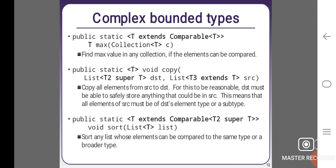Complex bounded types. public static <T extends Comparable<T>> T max(Collection<T> c) - find maximum value in any collection if the elements can be compared. public static <T> void copy(List<? super T> dst, List<? extends T> src) - copy all elements from src to dst. For this to be reasonable, dst must be able to safely store anything that could be in src. This means that all elements of src must be of dst's element type or a subtype. public static <T extends Comparable<? super T>> void sort(List<T> list) - sort any list whose elements can be compared to the same type or a broader type.